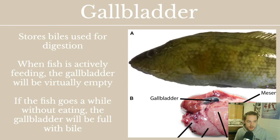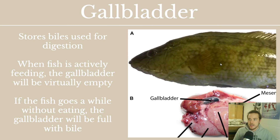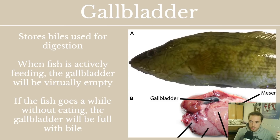The gallbladder stores the bile used for digestion — the enzymes that break down food. An interesting thing: when fish are actively feeding, the gallbladder will be virtually empty, because all that bile is being used to digest things. If the fish goes a while without eating, the gallbladder will be full with bile. You can actually tell how long it's been since a fish has eaten by looking at how much bile is stored in the gallbladder when you cut it open.